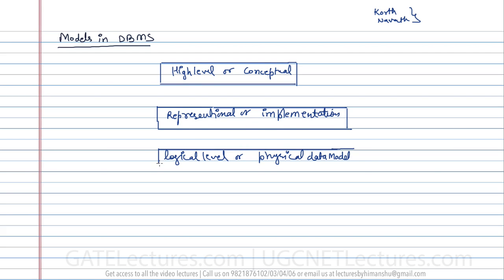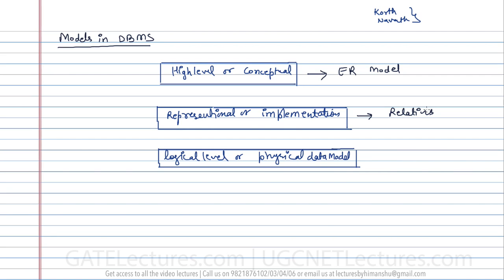When we have the high-level or conceptual model, we generally discuss the ER model — that is, Entity-Relationship diagrams. When we say representational or implementational model, we are mostly going to discuss about relations. When we talk about the logical level or physical level, we discuss the actual physical storage of data — how the database is stored in memory and what underlying data structure is being used.